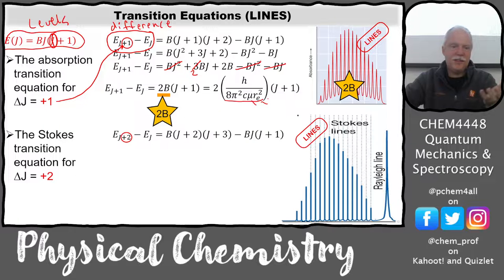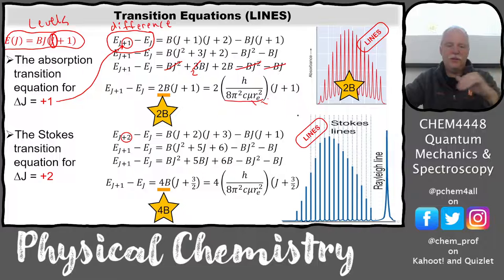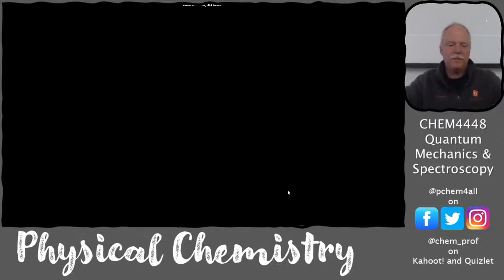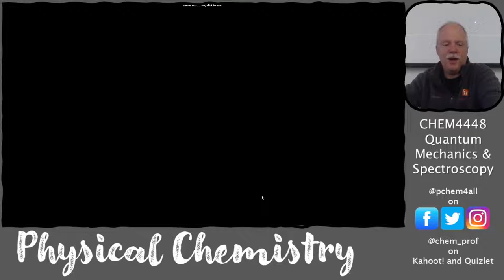For the Stokes Raman transition with ΔJ = +2, the transition equation gives a spacing of 4B — confirming that result. So that wraps up this lecture, which is a stepping stone to combining rotation and vibration on Friday. Fridays are not optional.